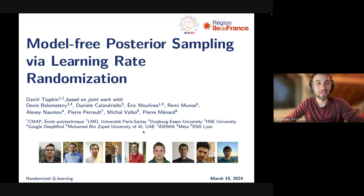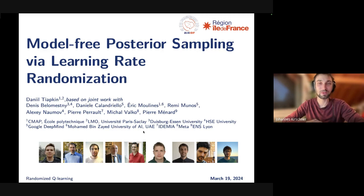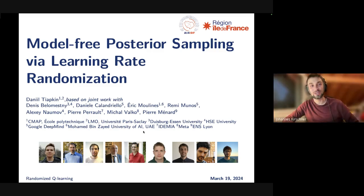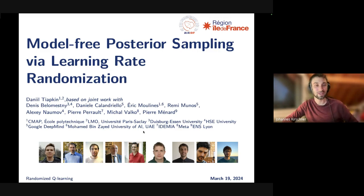All right. Hi everyone. It's my pleasure to introduce Daniel Thiabkyn today, who is no stranger to you if you've been around last week. He is a first-year PhD student at Ecole Polytechnique in Paris, working with Eric Moulin. He's interested in topics like exploration and randomization. Today's title is very interesting — he is using learning rate randomization for posterior sampling. Daniel, welcome, please go ahead.